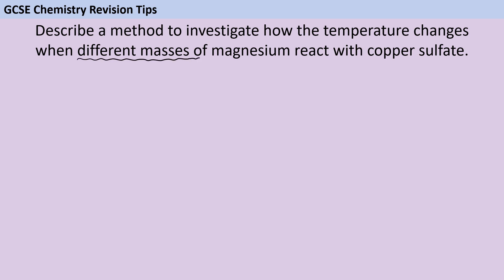So here, our independent variable is the thing that we're changing — it's those different masses of magnesium. And then the dependent variable, the thing we're looking at to see how the independent variable affects it, is going to be the temperature change.